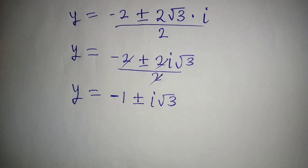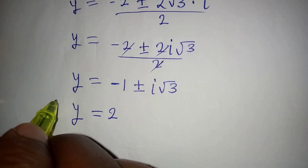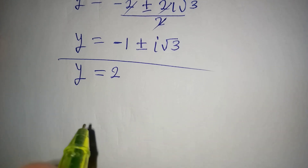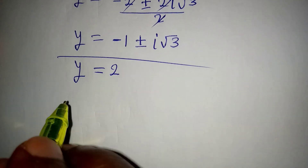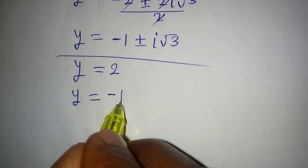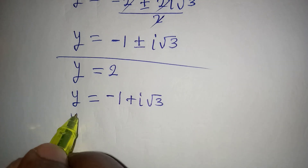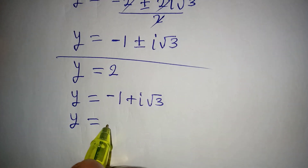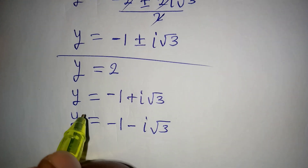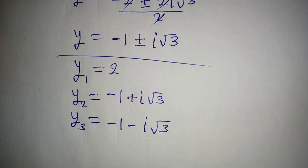Let me bring the three solutions together. y equals 2, which was the first answer we got. y equals minus 1 plus i root 3. And y equals minus 1 minus i root 3. So these are our three solutions: y1, y2, and y3. Thank you for watching.